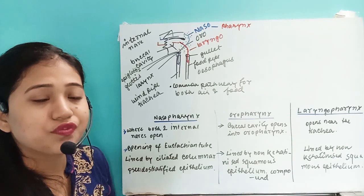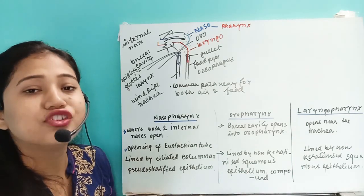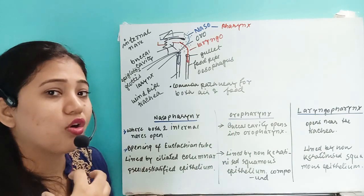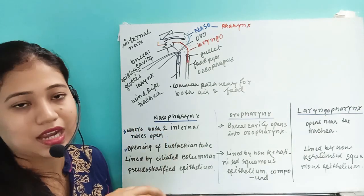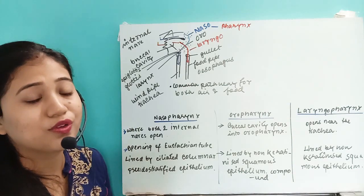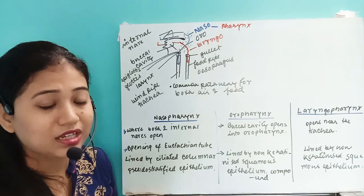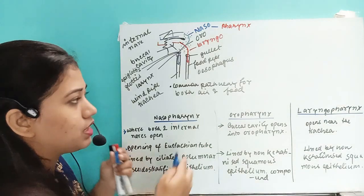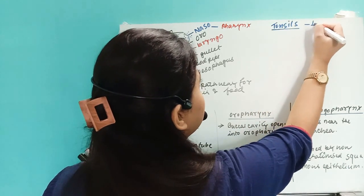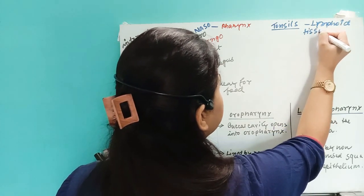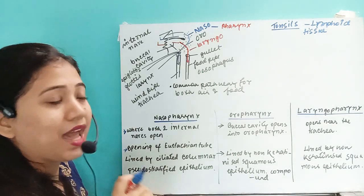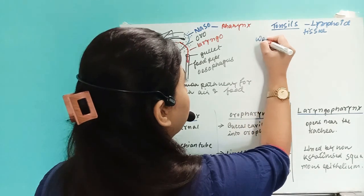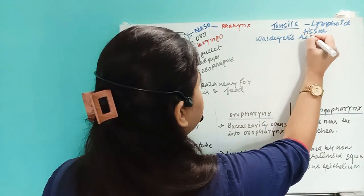The pharynx is also the doorway for foreign particles entering our body through air or food. Because of this, in the pharynx region there is a ring of lymphoid tissue. This ring-like arrangement of lymphoid tissues is called tonsils, and the entire ring structure in the pharynx region is called Waldeyer's ring.